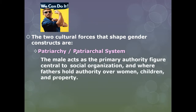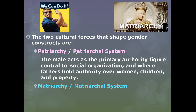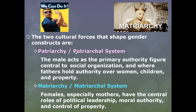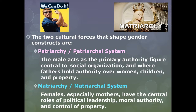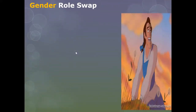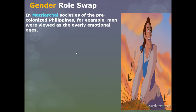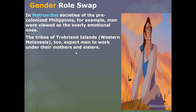In patriarchy, the male acts as the primary authority figure, central to social organization, where fathers hold authority over women, children, and property. The matriarchal system also shapes how gender is constructed — that is when females, especially mothers, have the central roles of political leadership, moral authority, and control of property. These two systems create important dynamics in how gender is perceived. Matriarchy does not mean equality; patriarchy does not mean equality. What would be equality is an egalitarian society.